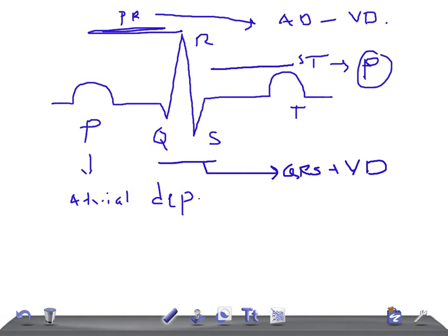Then we have a positive wave known as the T wave, and the T wave is due to ventricular repolarization.